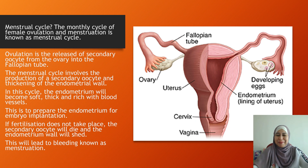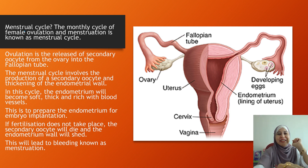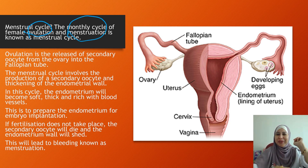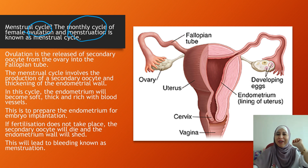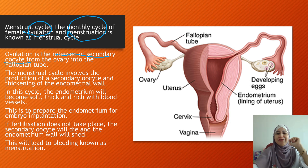What is the menstrual cycle? The menstrual cycle is the monthly cycle that occurs in females, and there are two important processes involved: first, ovulation, and the second one is menstruation. Ovulation is the release of the secondary oocyte from the ovary into the fallopian tube.